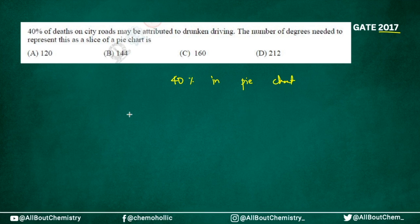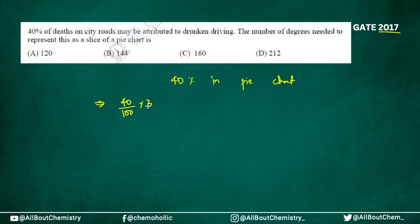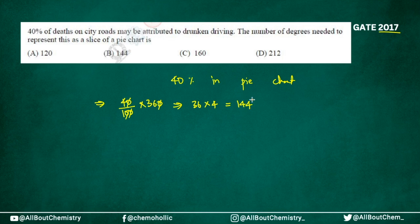This is again the case where you are converting percentage into angle. What you do: take the percentage value 40, divide by 100, and multiply by 360. The zeros cancel out, giving 36 times 4, and you get 144. So 144 degrees is the slice you need.